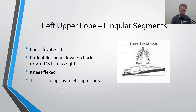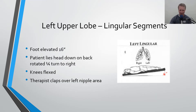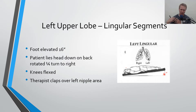For the left upper lobe — the lingular segment — it's essentially the same as the right middle lobe. You'll be 16 inches up on the feet, lying down and quarter turned to the right with knees flexed. You'll be clapping over the left nipple area. Remember, you're rotating the person so the fluid inside the lungs is in a gravity-assisted position to help it drain out.